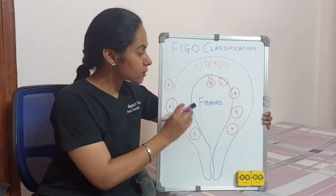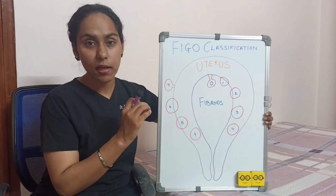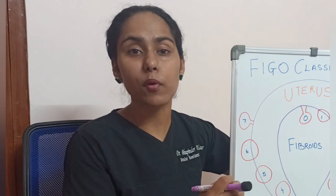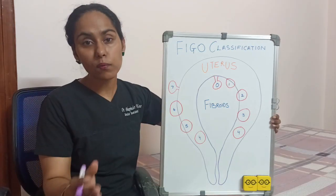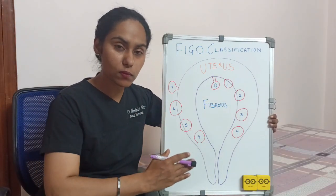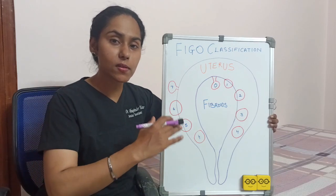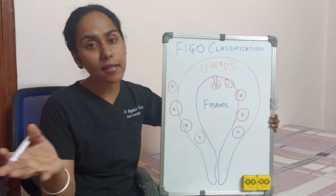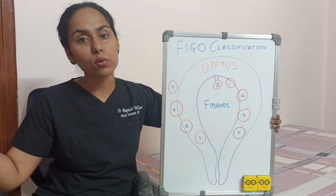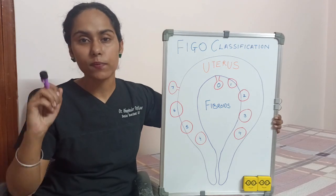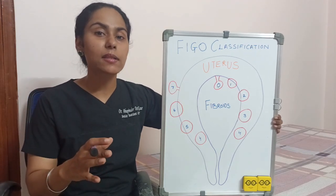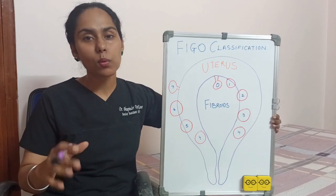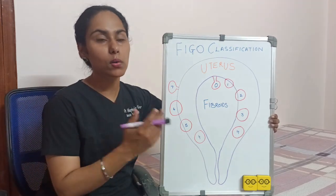The classification ranges from type 0 to type 8. Moving forward from type 0, we first have the submucosal fibroids, then they go towards the intramural component, and then towards the subserosal component as we go through to type 7. Type 8 basically means we have a parasitic type of fibroid. Without wasting time, let's go on to this diagram.